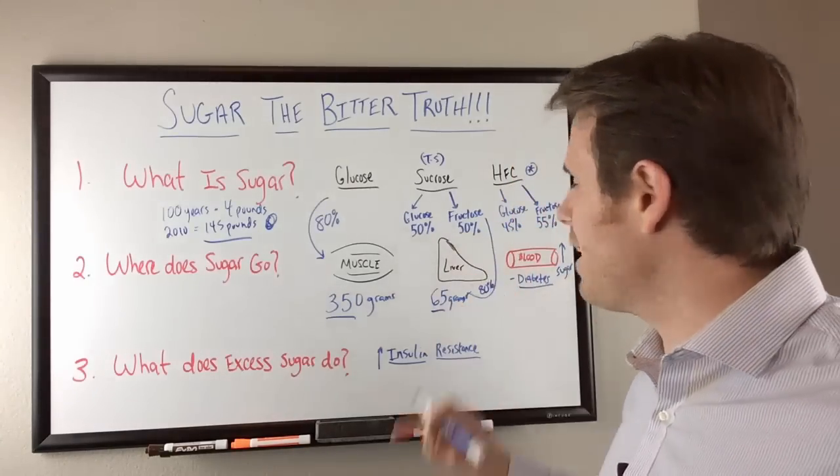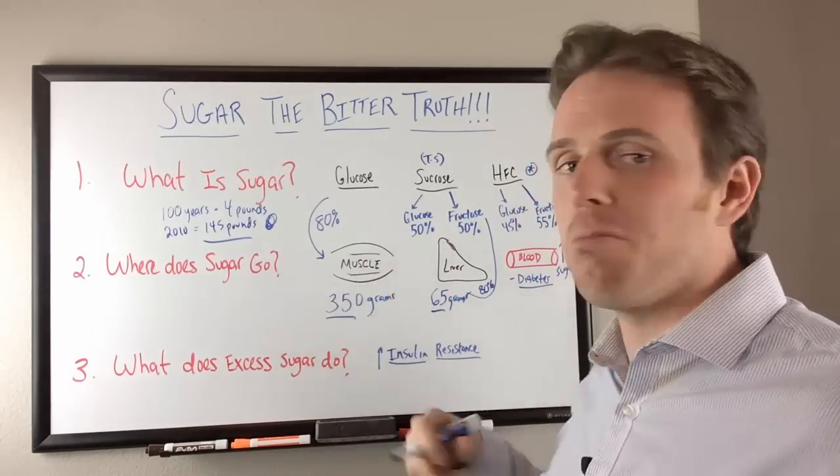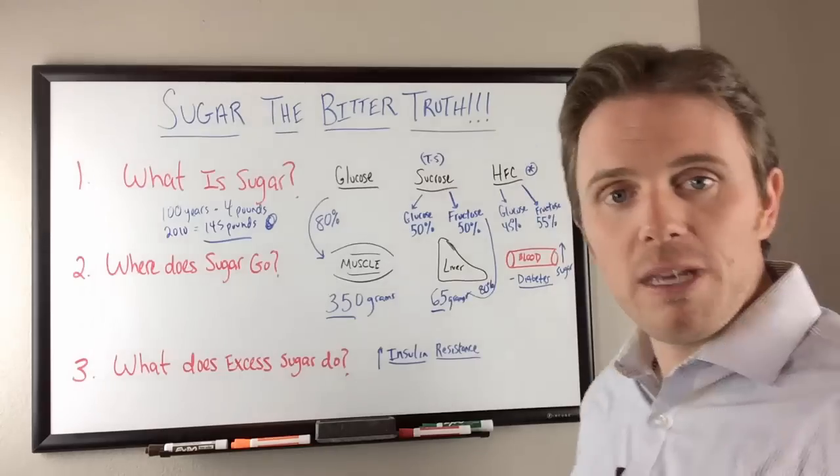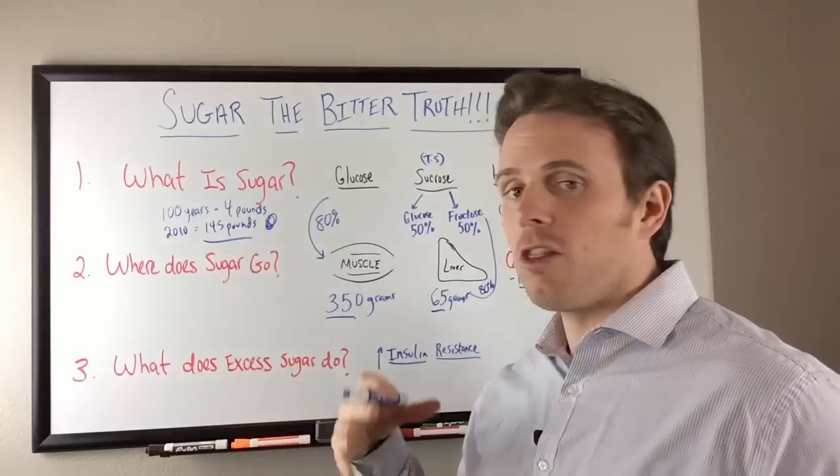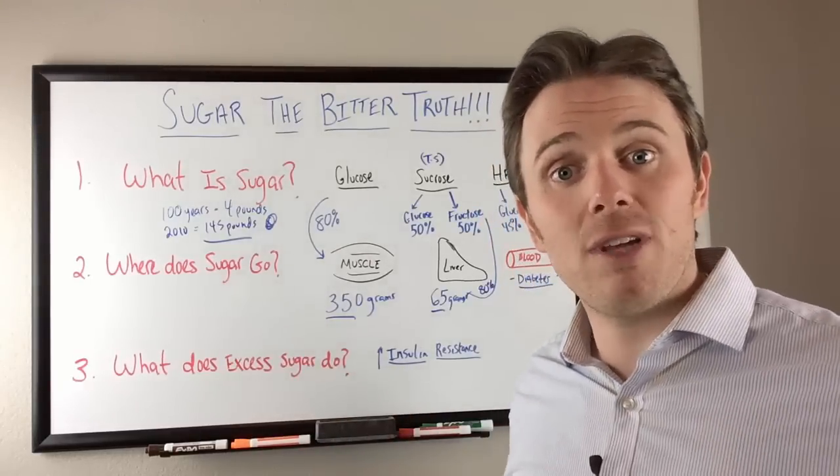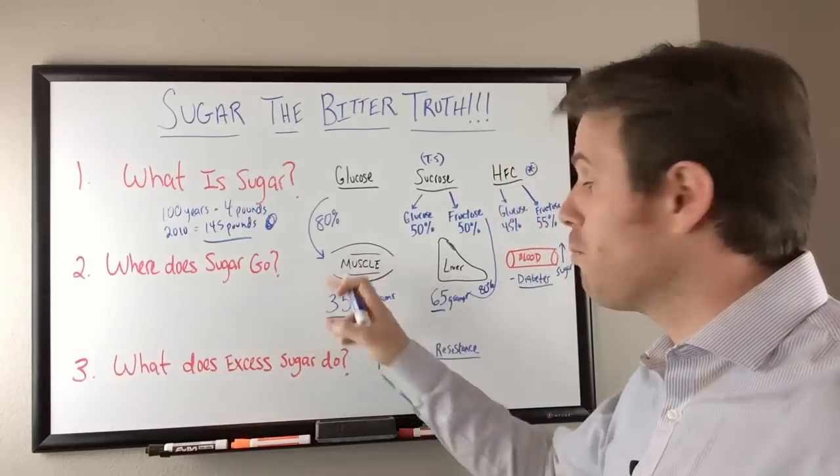And again, it's hard to tap into that liver glycogen off the bat. Typically, your body will go into the muscle glycogen first because you're being active and you're moving. And then the liver glycogen second. So getting on a lower carbohydrate diet and some exercise will help you tap into these reserves and bring you back down to neutral.